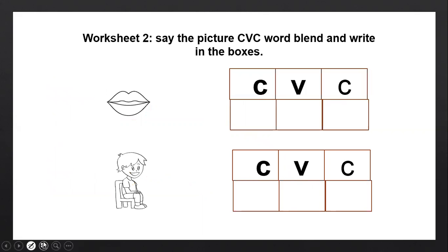So we'll write again. Worksheet 2. What does worksheet 2 say? Say the picture CVC word blend and write it in the boxes. So we'll see the picture and blend it CVC and write it in the boxes here. Okay, so what picture is this?